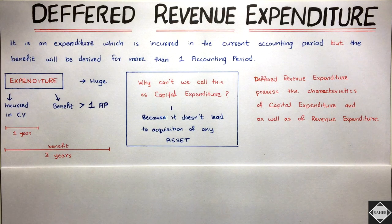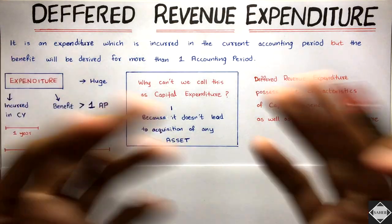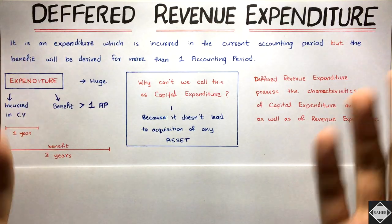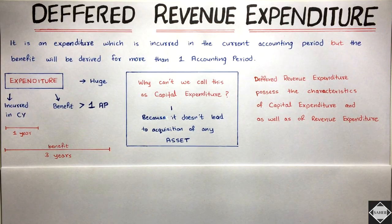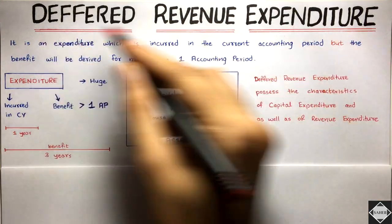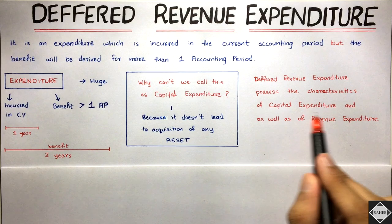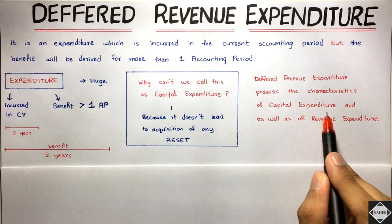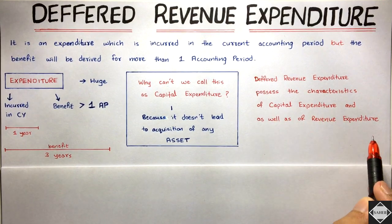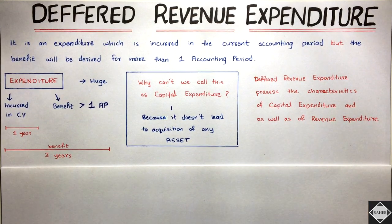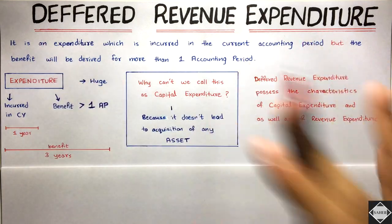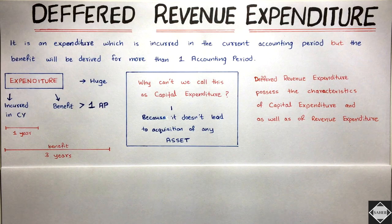After this we have something called deferred revenue expenditure. Now what is this and where did it come from? Deferred revenue expenditure has both the characteristics — it has the characteristics of capital expenditure as well as of revenue expenditure. We have to understand properly how that is.